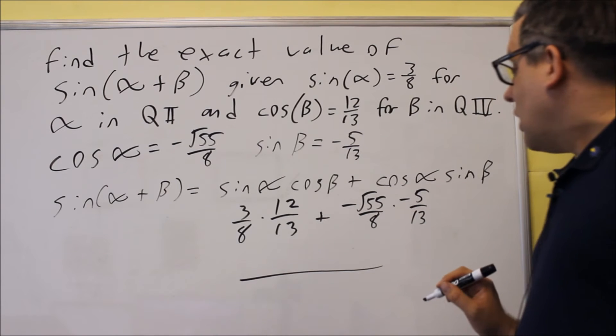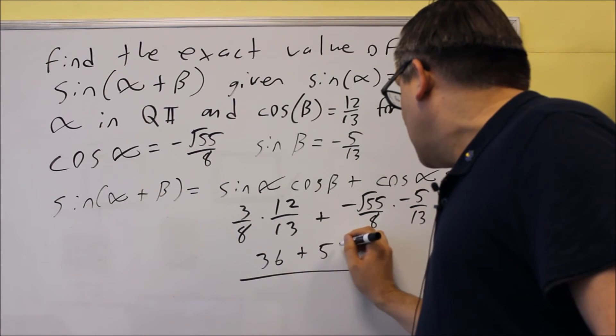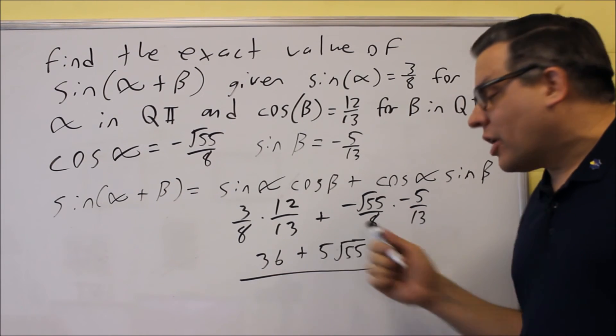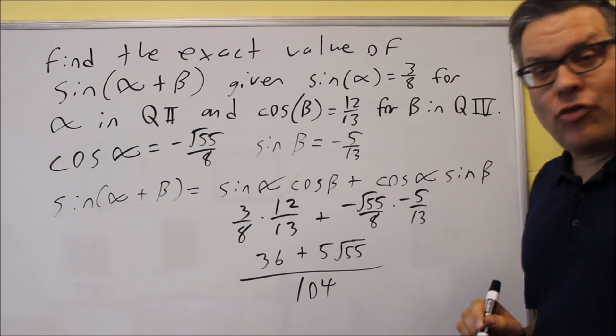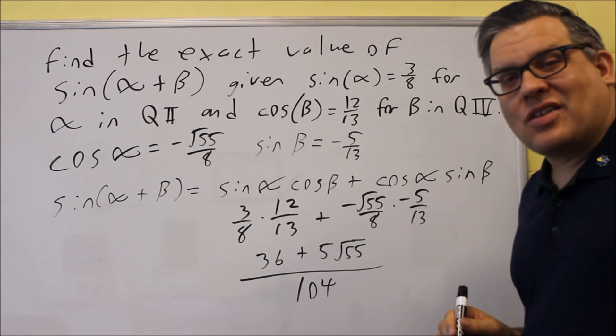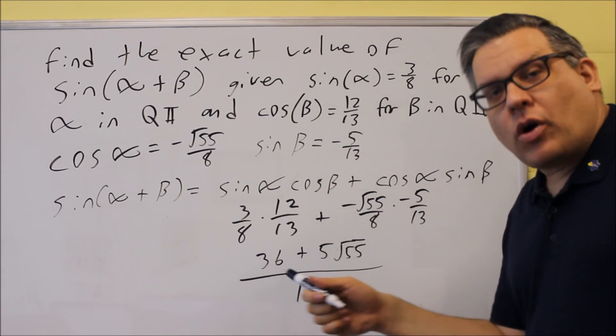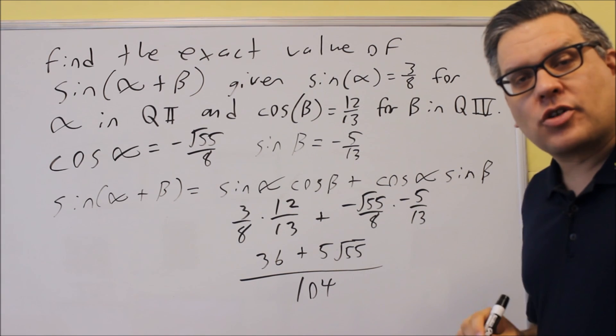Okay, we have a common denominator we can do here. We're going to do 36 plus 5 root 55 on top. These are not like terms, so we're just going to leave it like that. On the bottom, we have 104. So this would be your exact value. So remember, if it says exact value, this is what they want. They want something in a fraction form with the radicals that are there. So you don't want to put decimals for these.